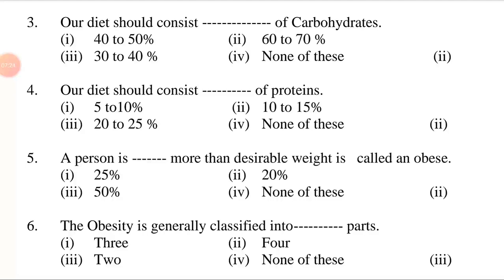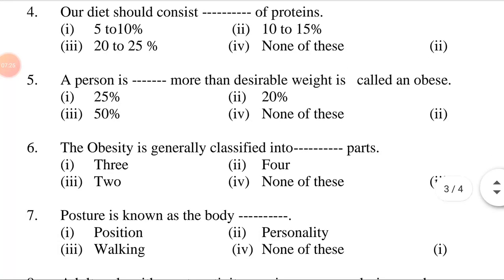Question 5: A person who is ___ more than desirable weight is called obese. Options: first, 25 percent; second, 20 percent; third, 50 percent; fourth, none of these. Answer is second option: a person who is 20 percent more than desirable weight is called obese.